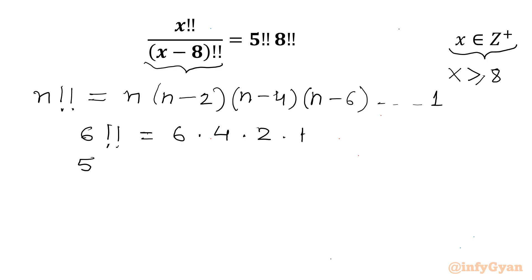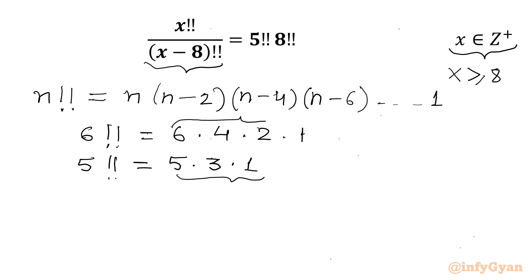Now come to 5 double factorial. It is 5 times, 5 minus 2 is 3, times 5 minus 4 is 1. So here we are reaching to 1. So this is odd parity and the previous example was even parity.